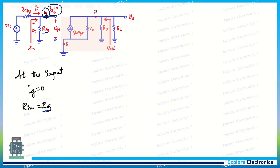Since R_signal is very small compared to RG, we can neglect R_signal with respect to RG. The expression simplifies so that RG cancels, giving VI = V_signal. Therefore VGS, measured from gate to source, equals VI, meaning VGS itself is our input signal.